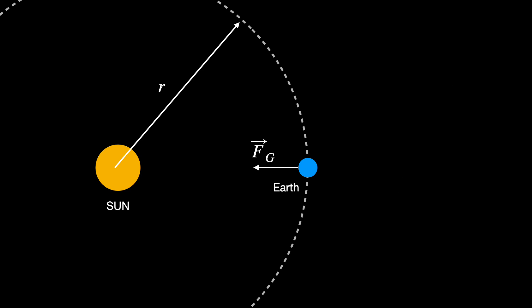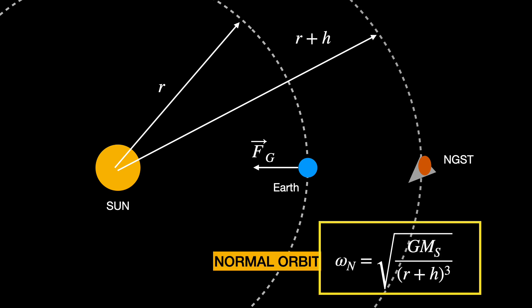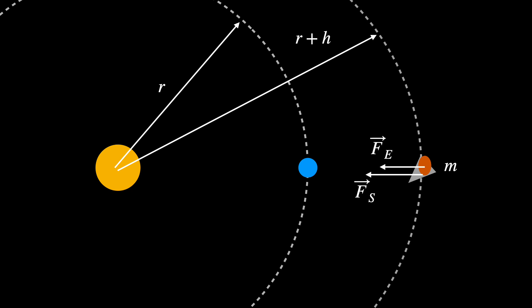Now what about the next-generation space telescope? It's here, a distance of r plus h away. If you use that orbital distance and you ignored everything else, it would have a smaller gravitational force and a different centripetal acceleration. It would have an angular velocity that has a denominator bigger than r, so it would have a slower angular velocity. It would not stay in the same position relative to the Earth. So here's how we fix that.